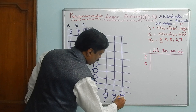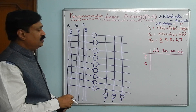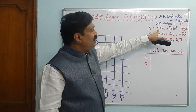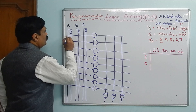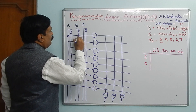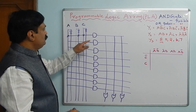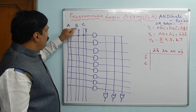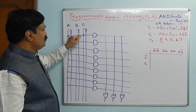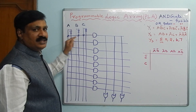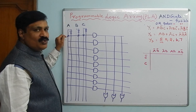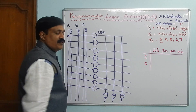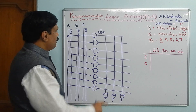Here we are going to implement the first equation. The first term is A·B̄·C, so you have to connect A, B̄, and C. Variable A is connected, variable B̄ is connected, and variable C is connected. A cross mark means it is connected — this AND-gate is connected to this particular variable. So now you have A·B̄·C. The first minterm is connected to this AND-gate.